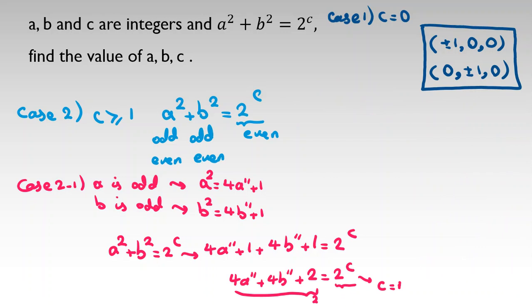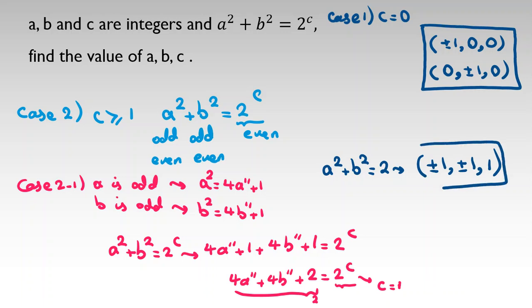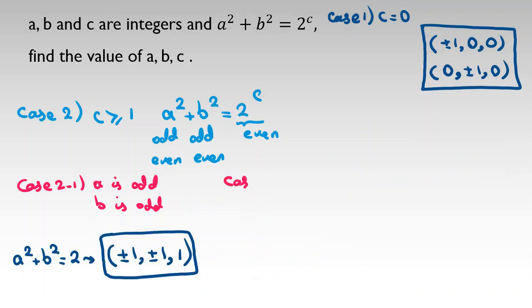With c equals one, a squared plus b squared equals two. Since a and b are odd integers, the only solutions are a equals plus or minus one, b equals plus or minus one. So the triples for this sub-case are (±1, ±1, 1).